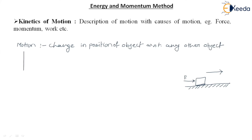Motion is mainly described in two terms: one is kinematics and another is kinetics. If we define kinematics, it describes the condition of motion — our object will be in motion, either in rectilinear motion, curvilinear motion, or rotation. There are three types of motion we consider. In kinematics we describe the motion of an object but we don't consider the causes of motion.